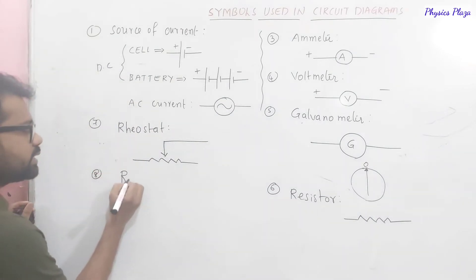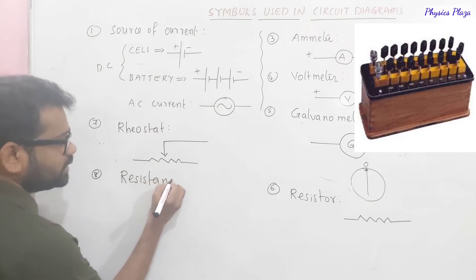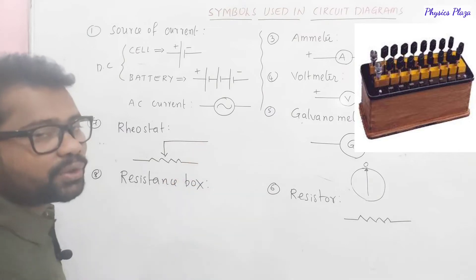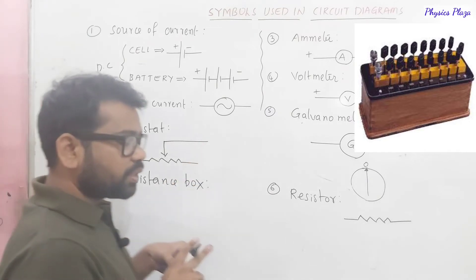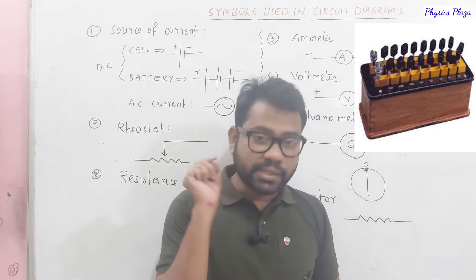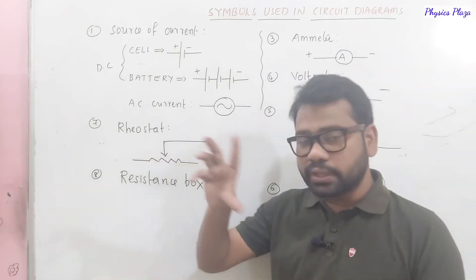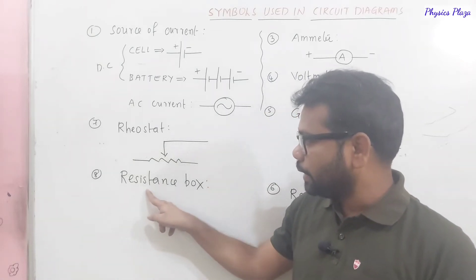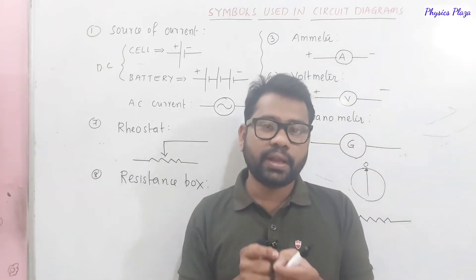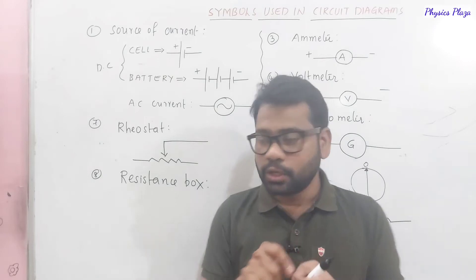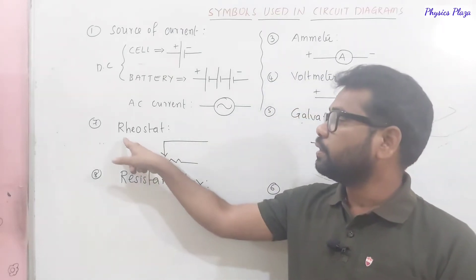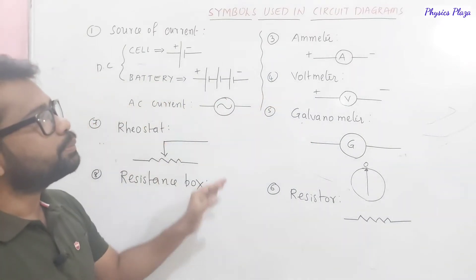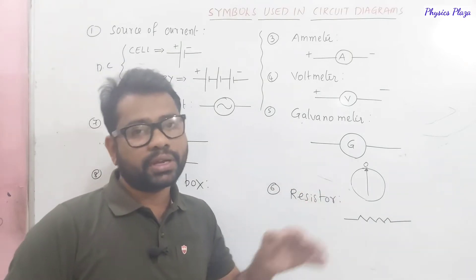The eighth component is the resistance box. Like the rheostat, it can be used to change the resistance. But the difference is that with a resistance box we know the exact standard values — either 2 ohm, 5 ohm, 10 ohm, 20 ohm — whereas with a rheostat we do not know the precise values. These are the important symbols used in circuit diagrams.